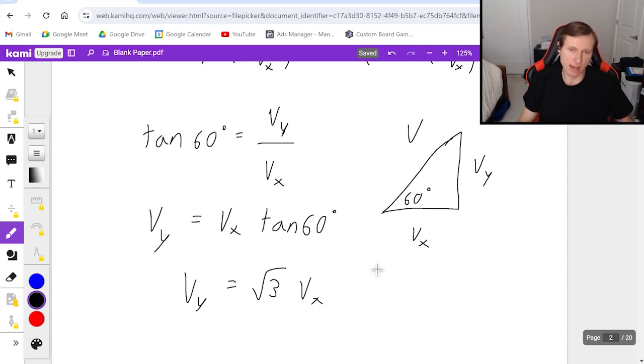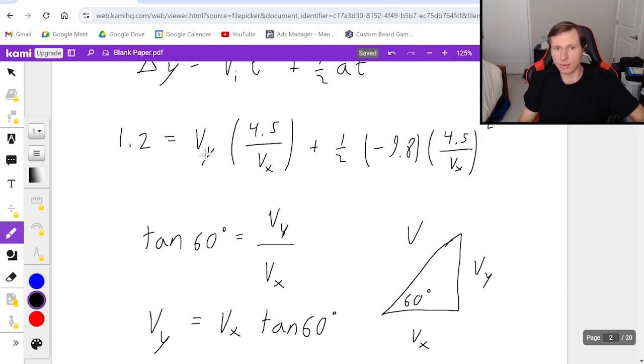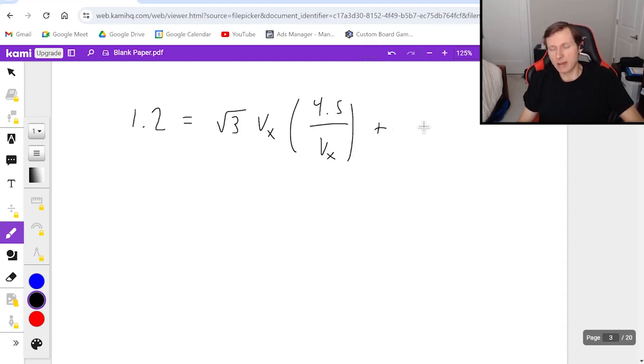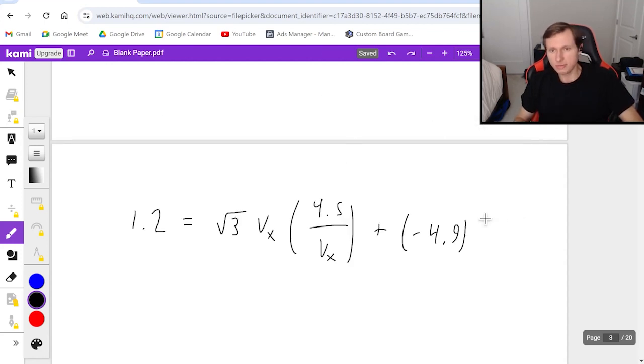And now I'm going to plug in this. I'm going to substitute in root 3 v_x for v_y right here. And it's going to be 1.2 equals root 3 v_x times 4.5 divided by v_x plus 1 half times negative 9.8 is negative 4.9. And then the t squared. So 4.5 squared is 20.25. And then that's divided by v_x squared.